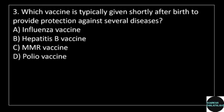3rd question: Which vaccine is typically given shortly after birth to provide protection against severe diseases? Answer options: option A, influenza vaccine; option B, hepatitis B vaccine; option C, MMR vaccine; option D, polio vaccine.